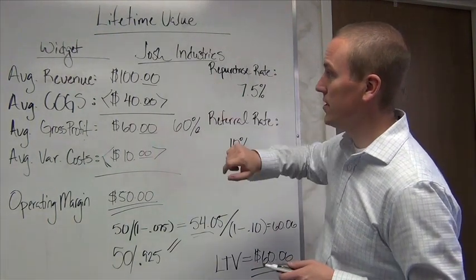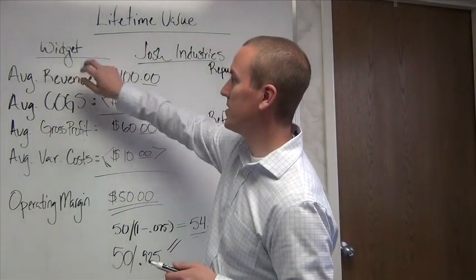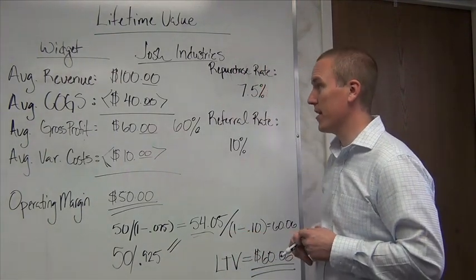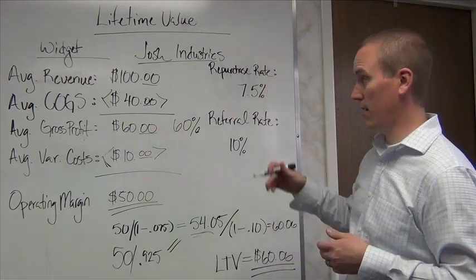I own Josh Industries. At Josh Industries we sell widgets, and it turns out that the average revenue per transaction every time we sell a widget is $100.